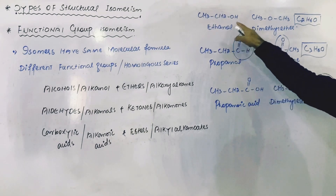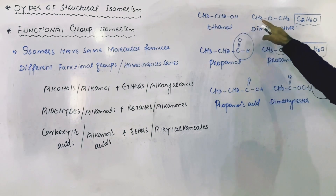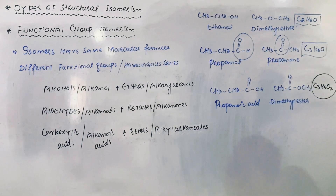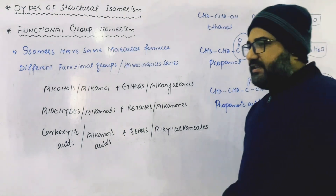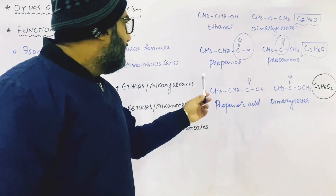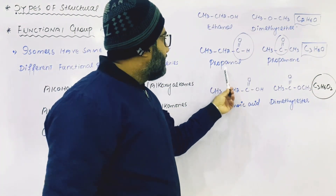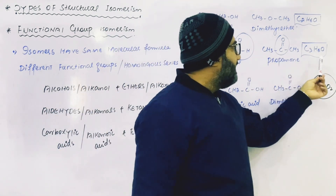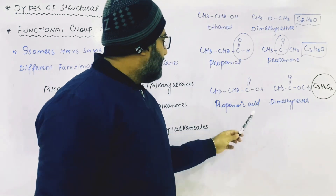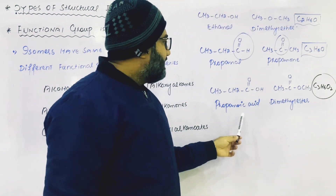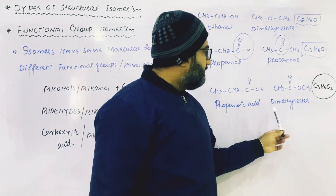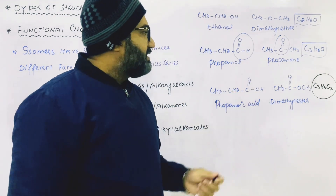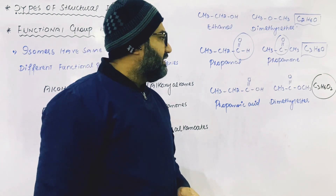Ethanol is a functional group isomer of dimethyl ether; both have the same molecular formula C₂H₆O. Similarly, propanal is a functional group isomer of propanone; both have the same molecular formula C₃H₆O. Lastly, propanoic acid is a functional group isomer of methyl ethanoate, and both have the same molecular formula C₃H₆O₂.